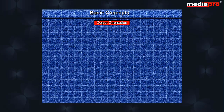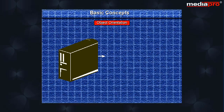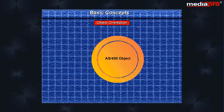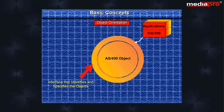Object orientation: The AS400 has an object-based architecture. Almost every named entity on the AS400 is an object. You have libraries, files, programs, commands, user profiles, job descriptions, subsystems, job queues, message queues and output queues. All objects are encapsulated — that is, they are protected by an interface that identifies the objects and also specifies the operations that can be performed on the object. Both the OS400 as well as applications relate to the object through this interface.